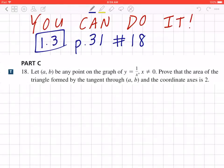Hi everyone, let's take a look at number 18 on page 31. Let (a, b) be any point on the graph of y equals 1 over x, where x cannot be 0. Prove that the area of the triangle formed by the tangent through (a, b) and the coordinate axes is 2.